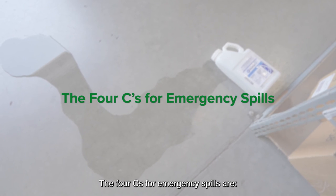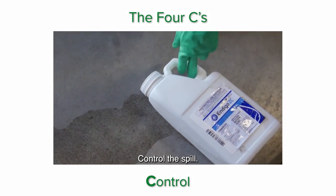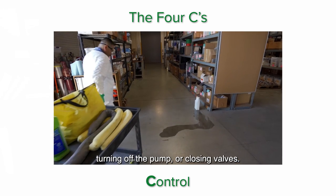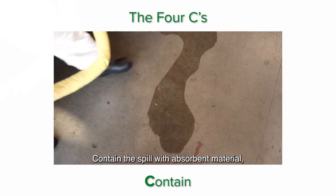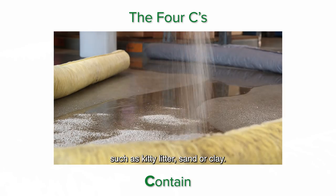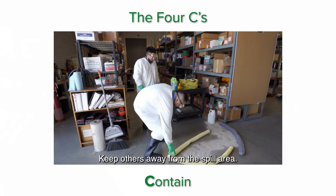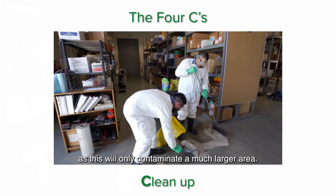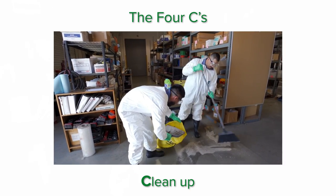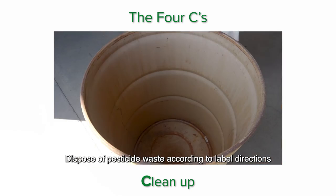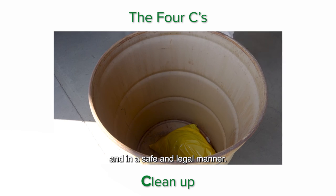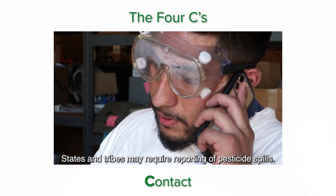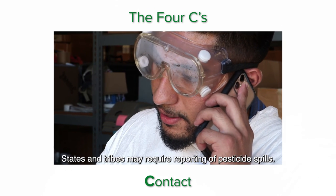The four C's for emergency spills are: Control the spill by stopping the leak or returning the container to an upright position, turning off the pump or closing valves. Contain the spill with absorbent materials such as kitty litter, sand, or clay, and keep others away from the spill area. Clean up the spill — never wash it down as this will only contaminate a much larger area. Dispose of pesticide waste according to label directions and in a safe and legal manner. Contact your supervising applicator immediately. States and tribes may require reporting of pesticide spills.